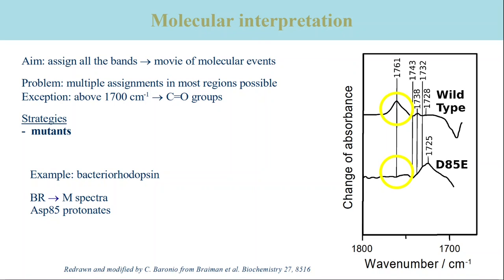The figure shows two spectra of the reaction from the bacteriorhodopsin ground state to the M intermediate. The positive band at 1761 reciprocal centimeters is observed for the wild-type protein, but not for the protein variant where aspartate 85 was replaced by glutamate. Therefore, the band in the wild-type spectrum is assigned to aspartate 85. The band is in the spectral region of protonated carboxyl groups and tells us, therefore, that aspartate 85 is protonated in the M intermediate.